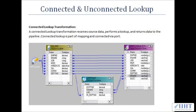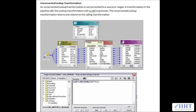An unconnected lookup transformation is not connected to a source or target. A transformation in the pipeline calls the lookup transformation with the colon lkp expression. The unconnected lookup transformation returns one column to the calling transformation. As you can see in the figure, the lookup transformation is secluded — not connected to any of the sources or targets — and in the properties in the expression editor you can see the column lkp dot uncon expression has been used.